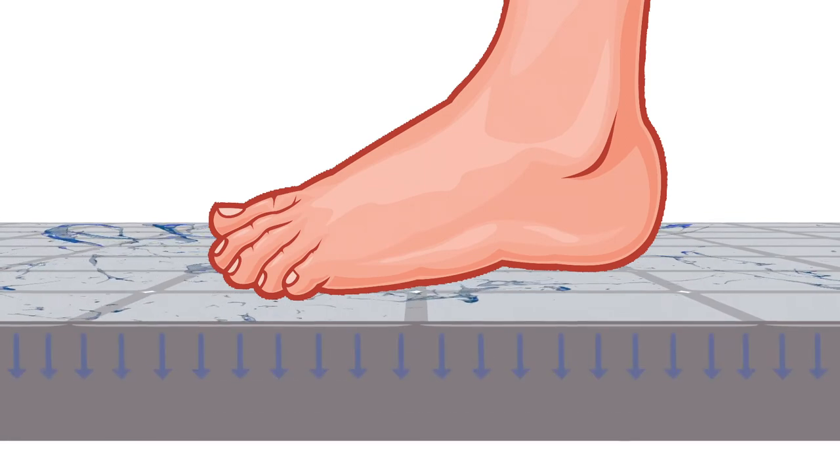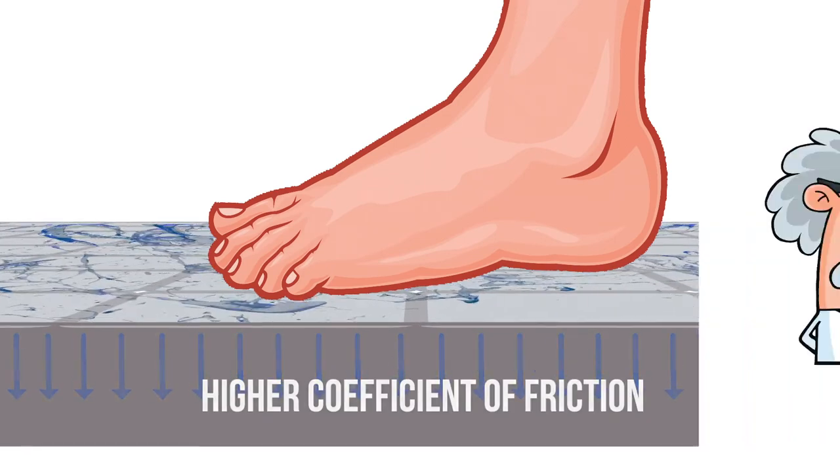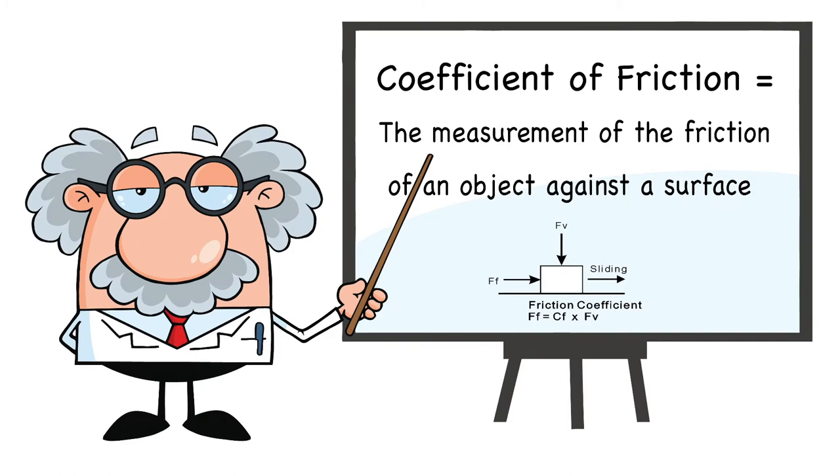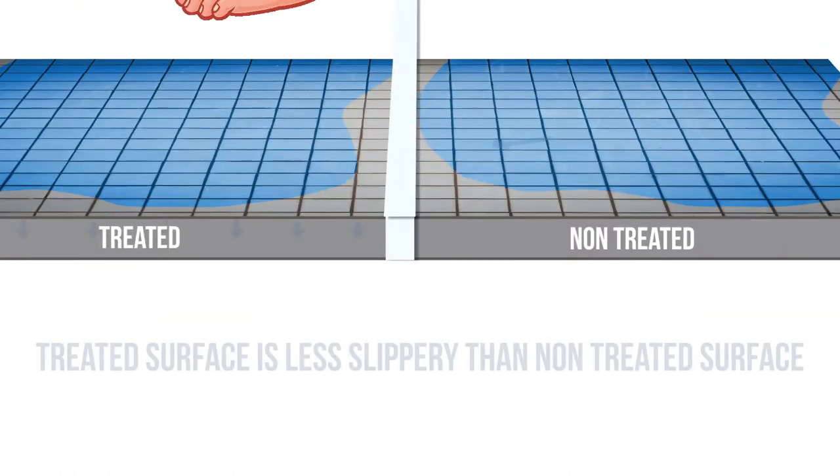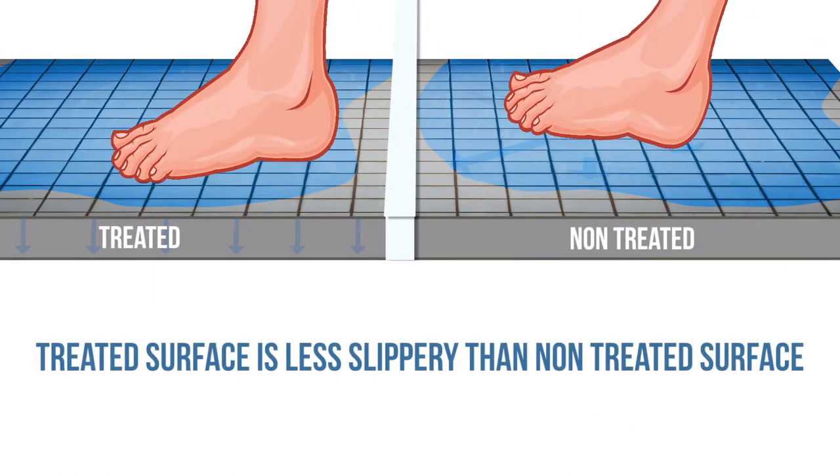This non-slip effect is the result of the product's higher coefficient of friction. Simply put, it's the friction of an object against a surface, which means your treated surface is less slippery than a non-treated surface.